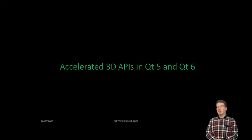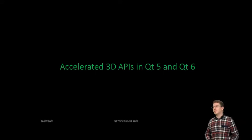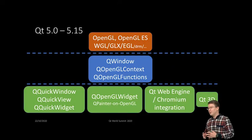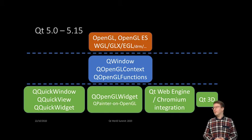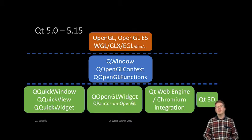Now the main section. Let's talk about how we use APIs like OpenGL and others in Qt 6, and what's the difference. Here is a diagram trying to show the situation in Qt 5. This contains no surprises and is fairly simple: we have OpenGL or OpenGL ES and the related windowing system interfaces — EGL, GLX, WGL, whatever is available on a given platform.